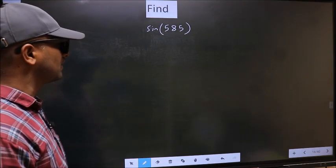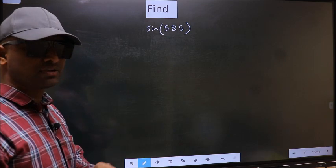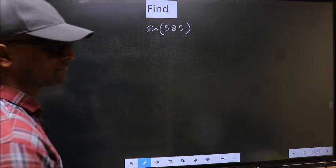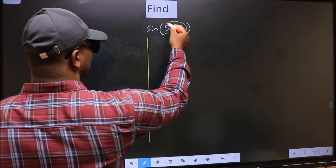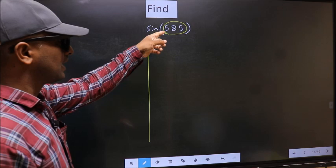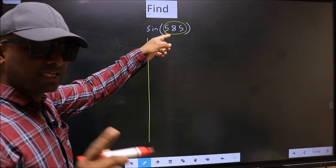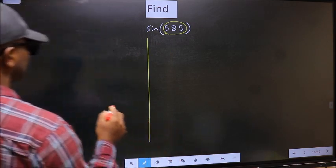Find sin 585. To find this, we should follow this method. Here we have 585. Now you should check 585 lies between which two multiples of 180. What I mean is,